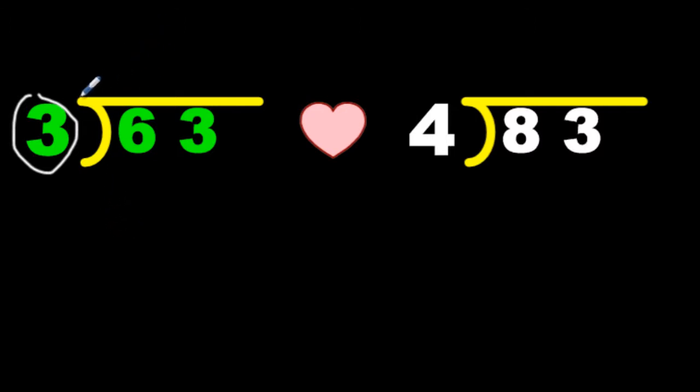So remember those two rules. Whatever I put on top, I have to multiply. Whatever I put on the bottom, I have to subtract. Now, what's this heart for? This is what it's for: just to cover this number up so we see less numbers. Let's make the equation simpler.